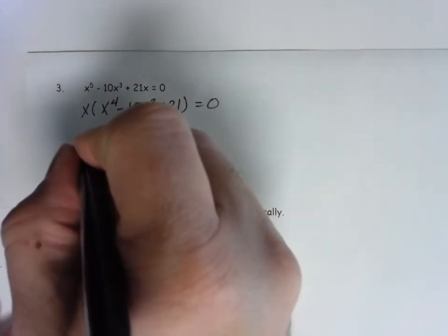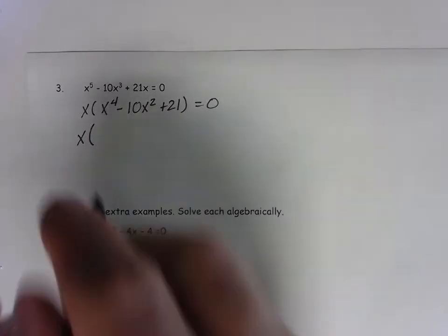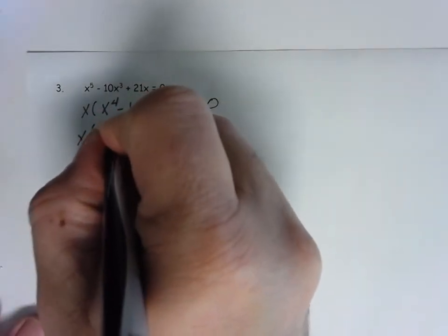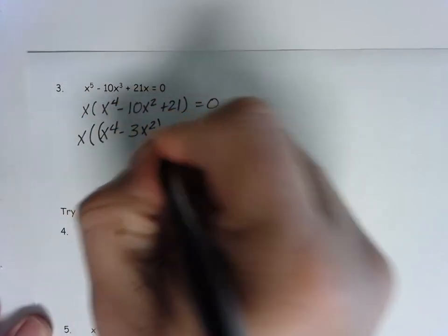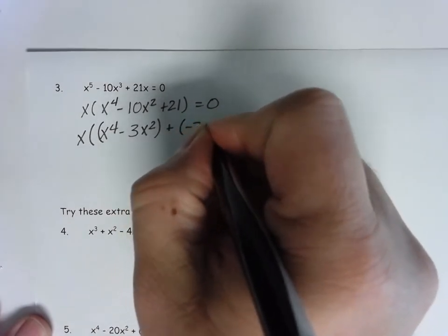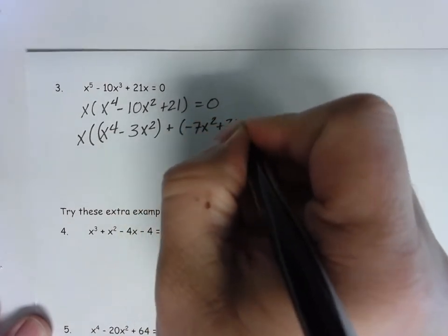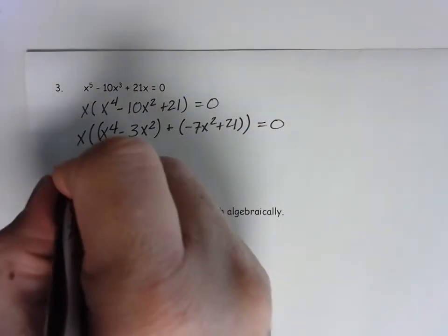Now when we look here, we want to break apart what are two numbers whose product is positive 21 and add to make negative 10. Well, that's going to be a negative 3. So I put that here. I put double parentheses, plus a negative 7. Of course, all equal to 0. Don't lose that x.